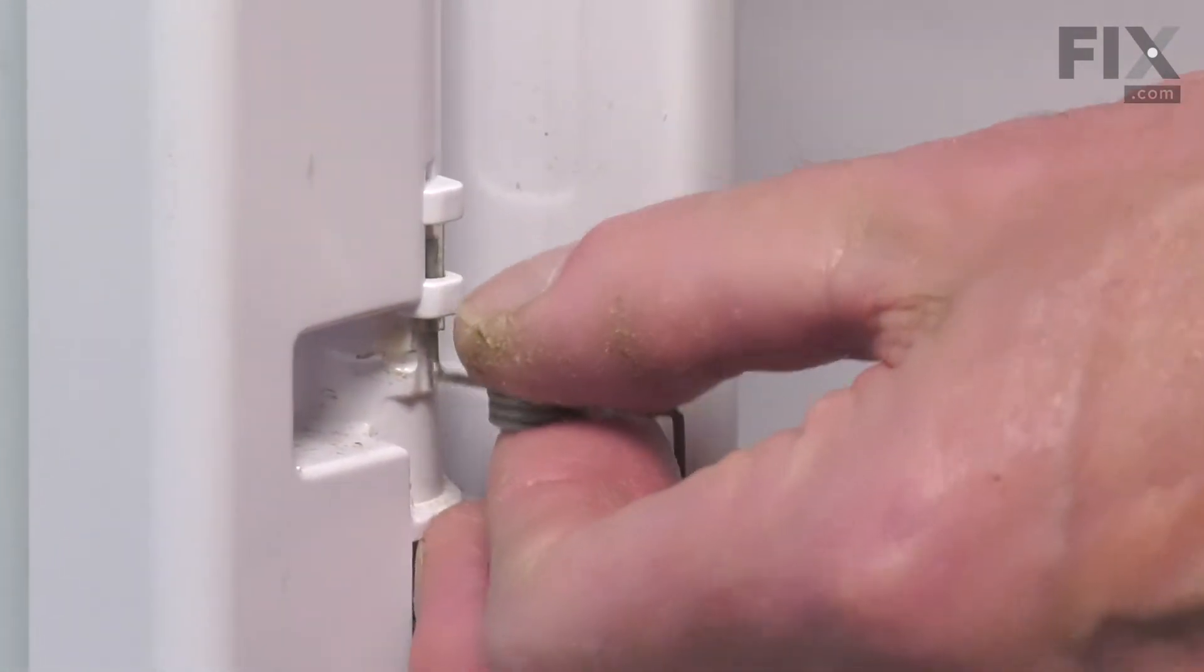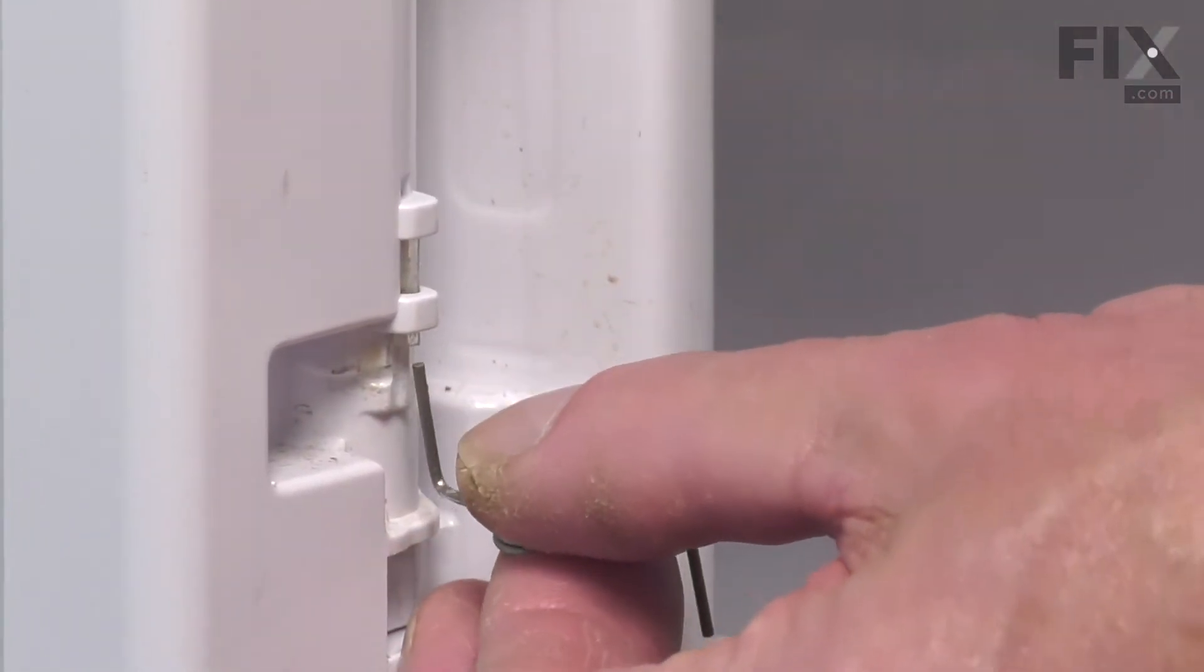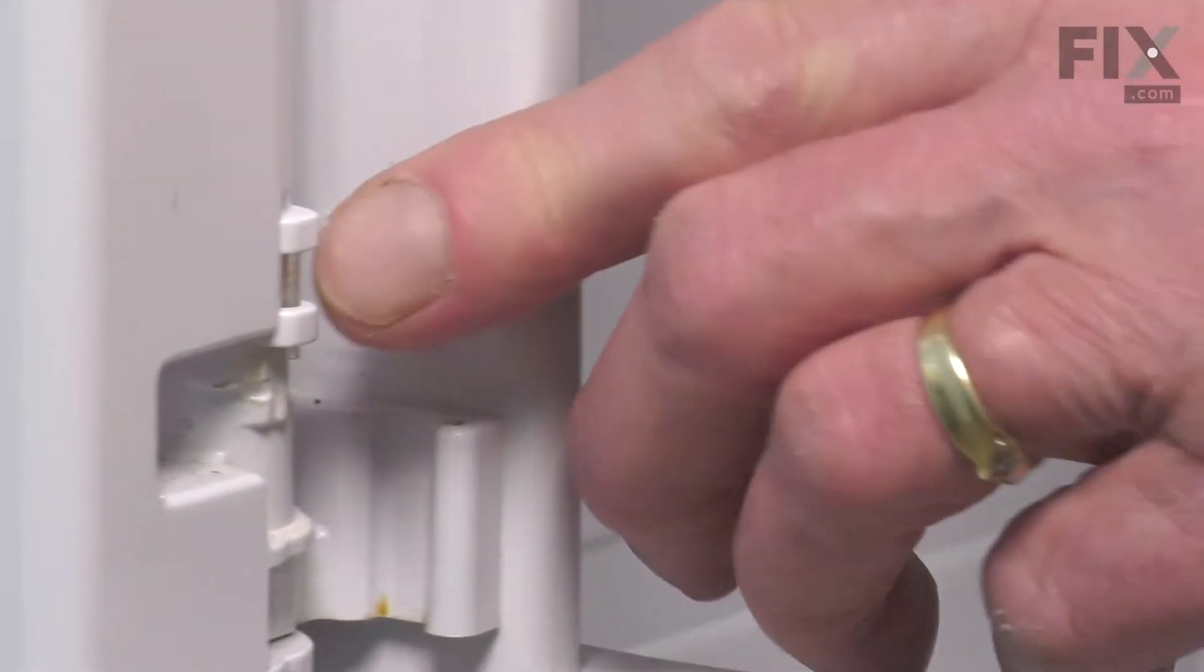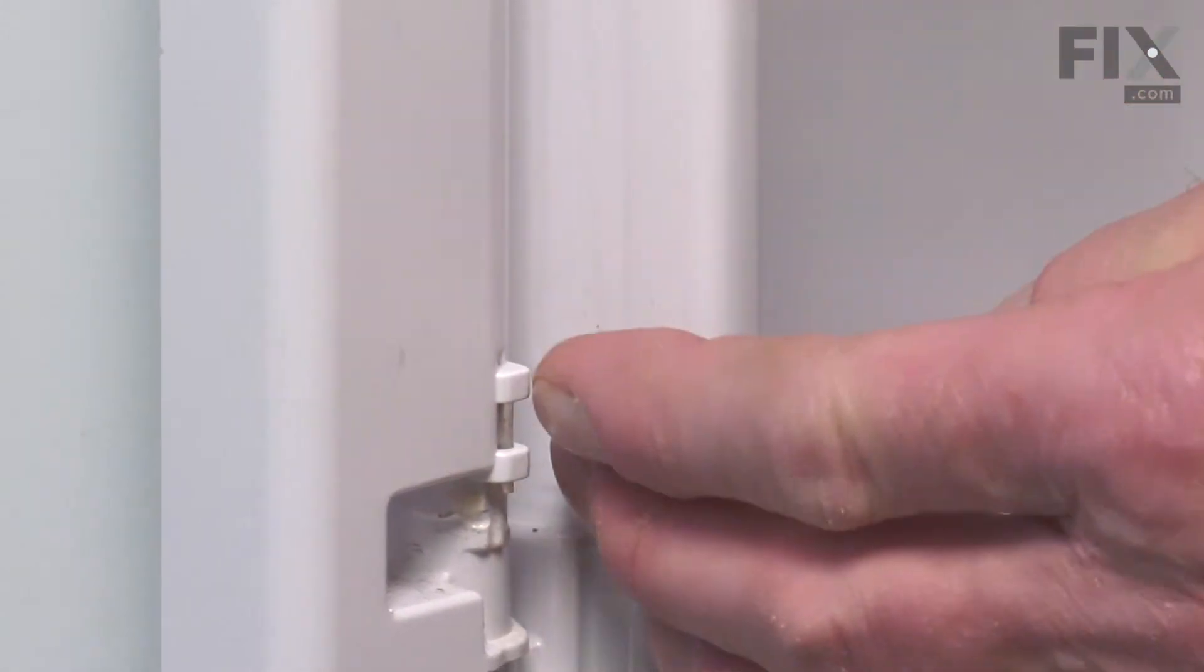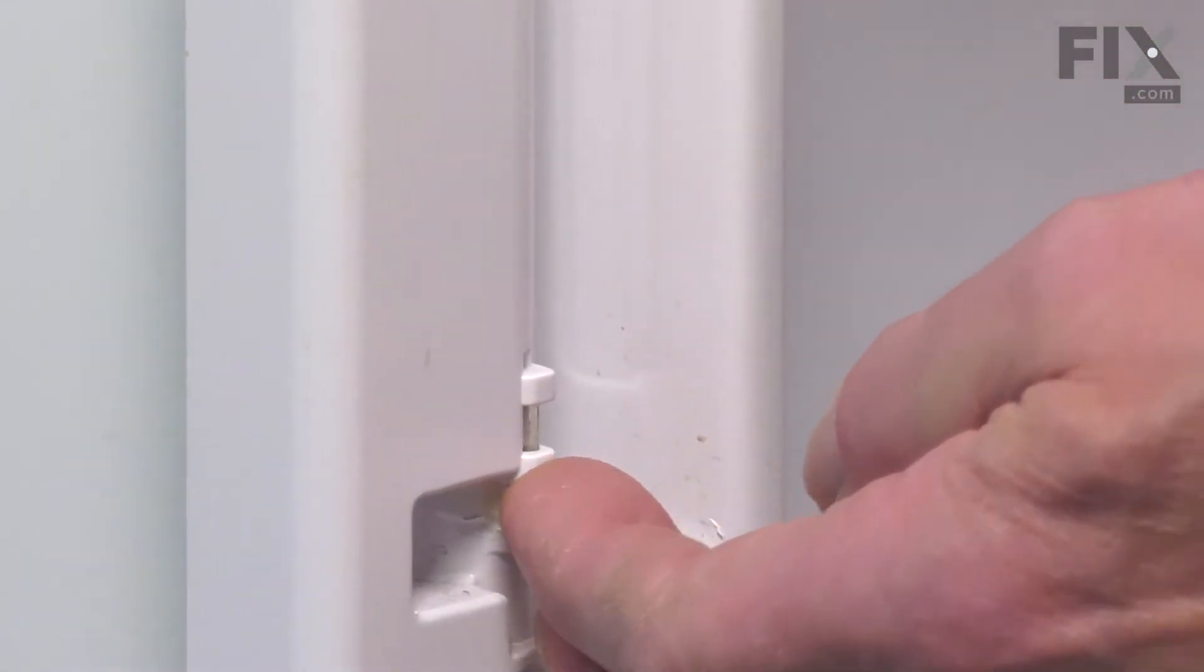You can then pull the spring out of the center mullion. There should be a small sleeve located in there as well. It may have stayed inside the mullion which is fine. Just make sure that we don't lose that.